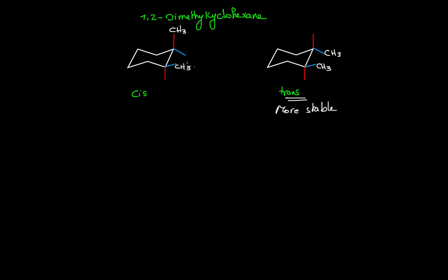In the cis conformation, we have one on equatorial and one on axial, and this axial group will have steric strain with the two hydrogens that are facing up on these two carbons.